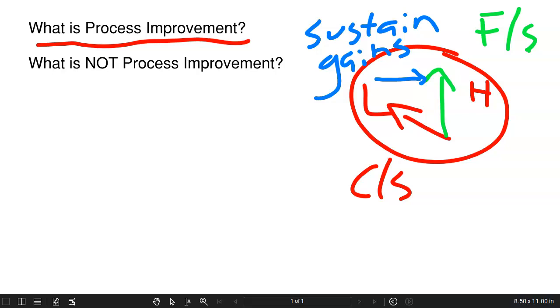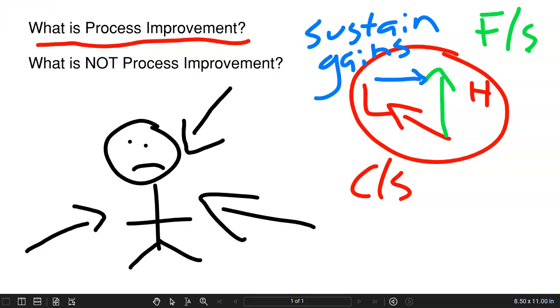Here's the last big thing about what is not process improvement. Process improvement is not the blame game where we identify a particular person or a particular work group and point fingers at that group saying, you need to improve your performance. You are the bottleneck. You are the slacker of the system. Here's what I mean. When we're dealing with process improvement, it's an approach that takes a look at many, many variables that are affecting that low performance that we see in current state.